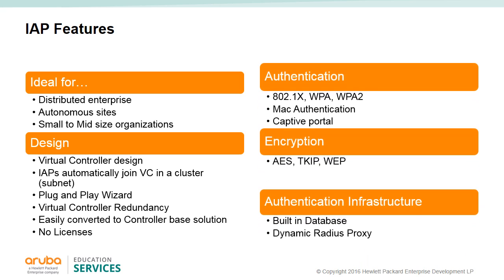Some of the enterprise features that the IAP has for deployment include multiple SSIDs that can be set up with 802.1X authentication or MAC authentication with supported WEP, TKIP, and AES encryption. Captive portal authentication can be used for guest access. Users can be authenticated on an internal database or use external servers, typically a RADIUS server. The VC serves as a proxy RADIUS, therefore only one client is defined in the RADIUS server to serve the entire cluster.